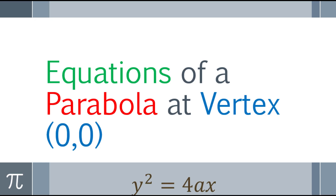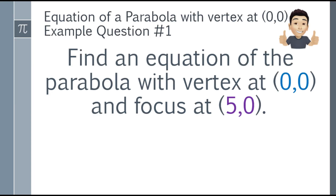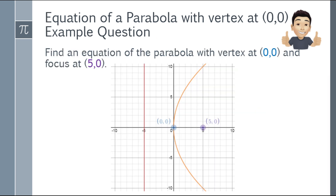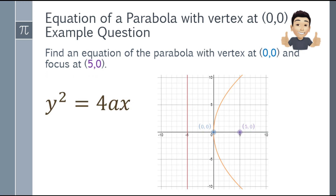Let's move to finding equations of a parabola with vertex at the origin (0,0). Question number 1: Find an equation of the parabola with vertex at (0,0) and focus at (5,0). First step — graph it to visualize the problem. The vertex is at the origin and the focus is at (5,0), which is to the right. Since the focus is inside the mouth, the parabola opens to the right, so we use y² = 4ax.